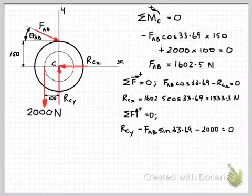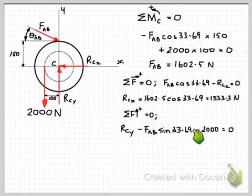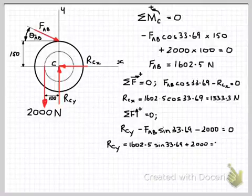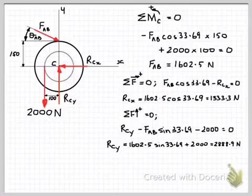So again, because we've already found FAB, we can find RCY straight away just by doing some maths. Simple maths. So rearrange the equation and solve for RCY, which will be equal to 2,888.9 newtons.